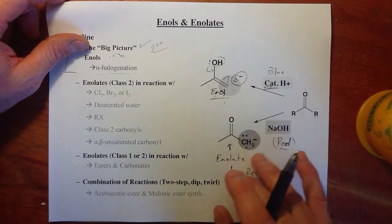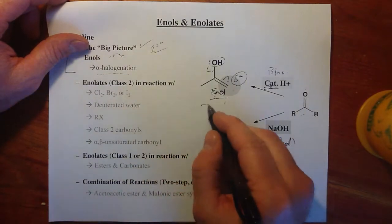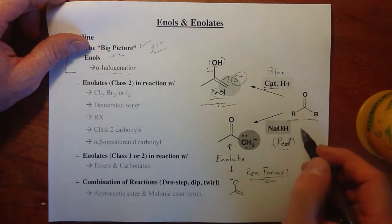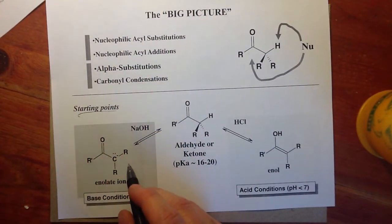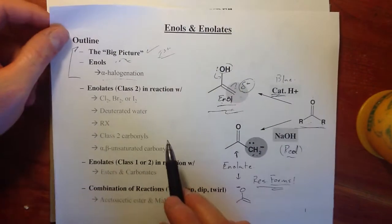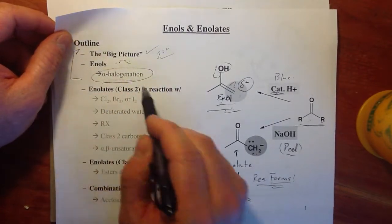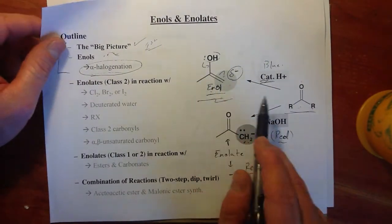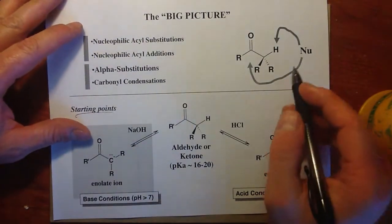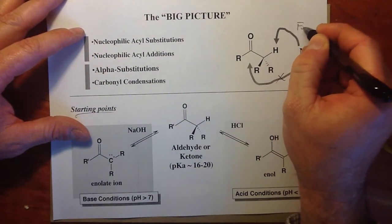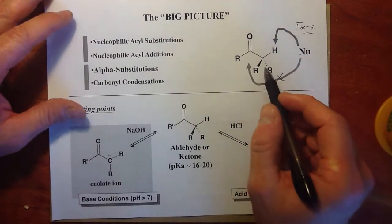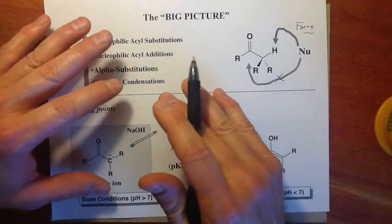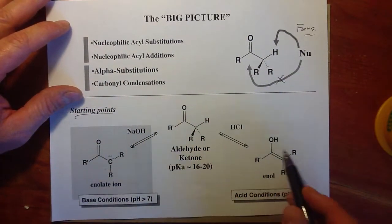We'll pick up on enolate chemistry in the second and third video. Let's focus on the enol — can we draw them from ketones or aldehydes? We're going to look at just one reaction involving acids and ketones and aldehydes: that's alpha halogenation, after we consider the transformation of ketones to enols, which is called tautomerization.